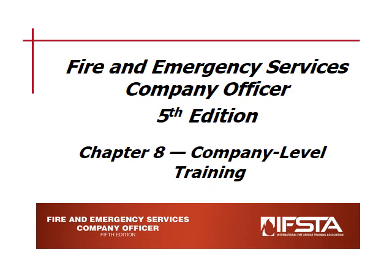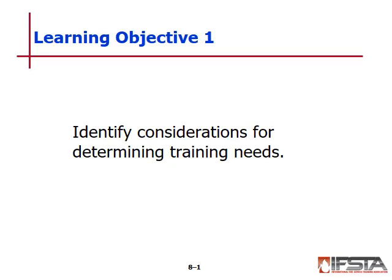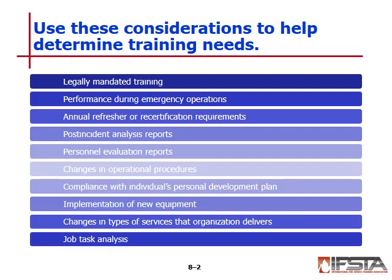Chapter eight: company training. The first objective is to identify considerations for determining training needs. Training needs can come from many different places. As a company officer, it's your job to understand where these needs come from and how to administer training.